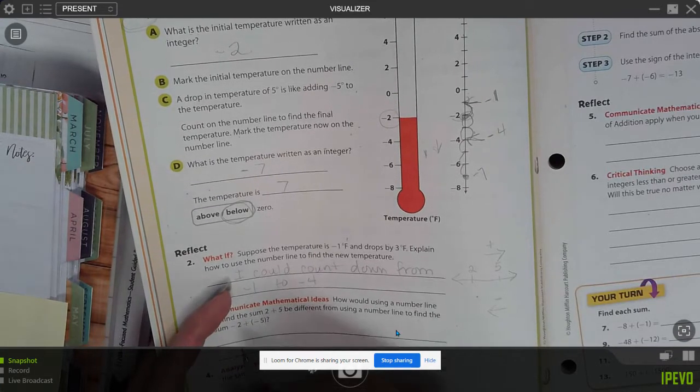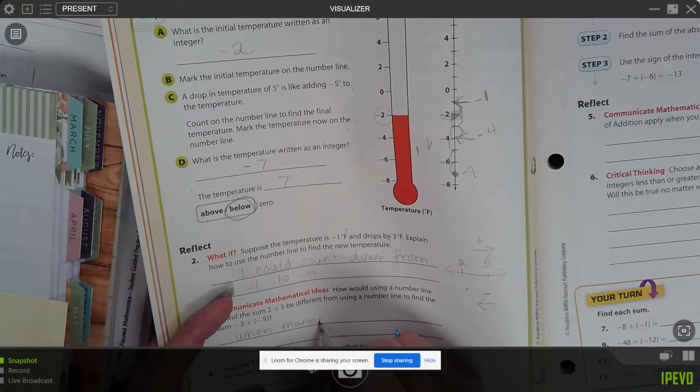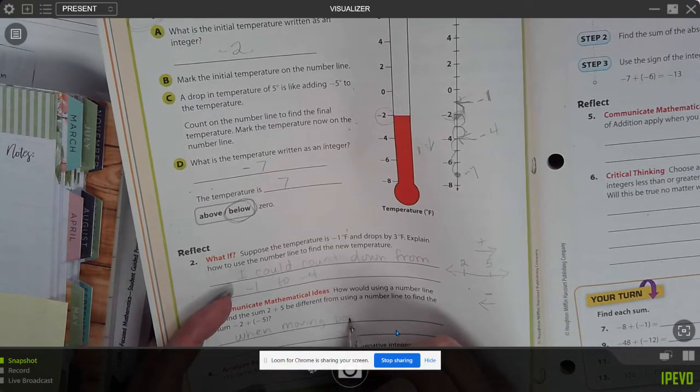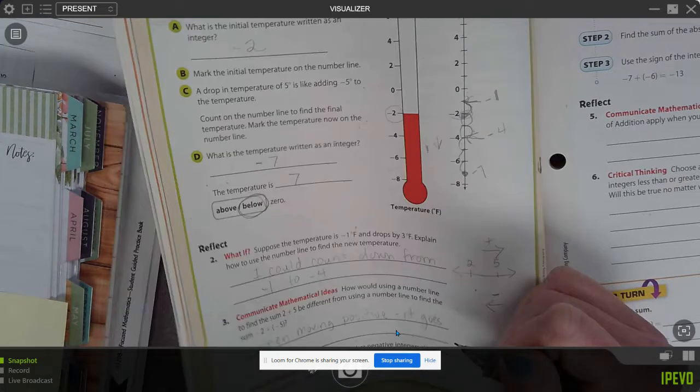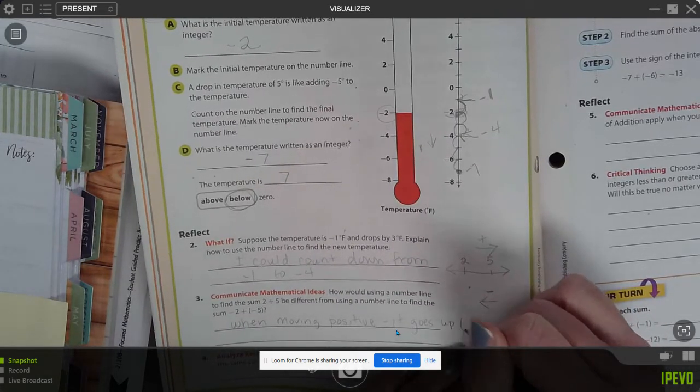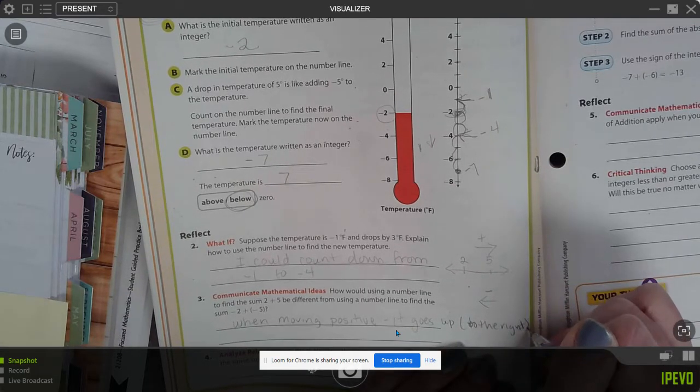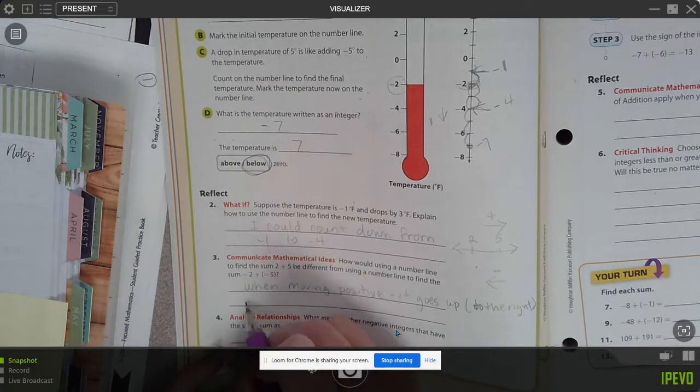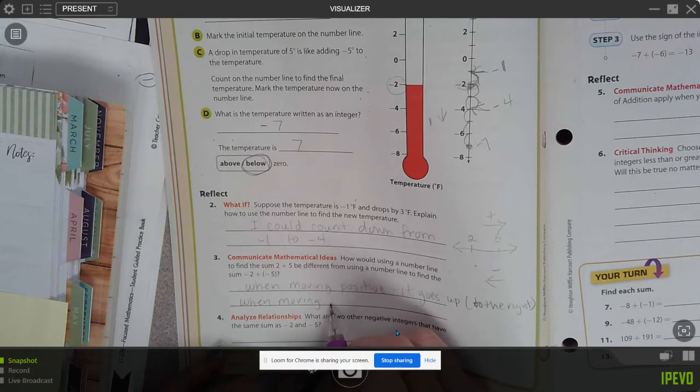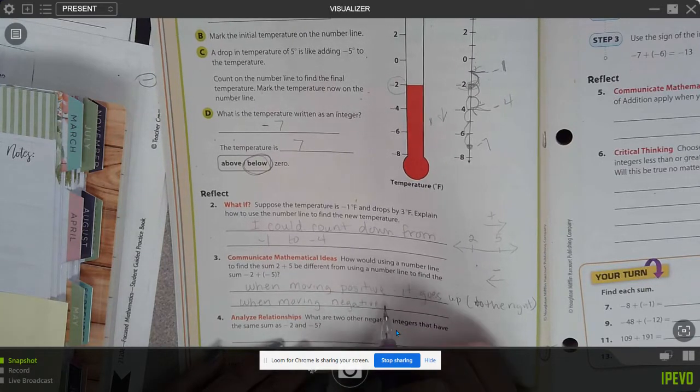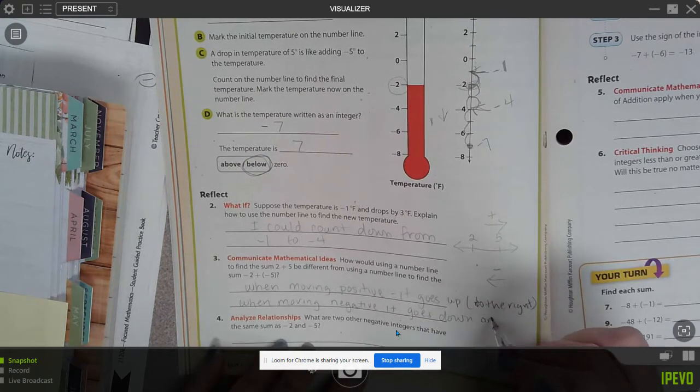So the best way to describe that would be to say, when moving positive, positive, it goes up or to the right. And on the opposite way, when moving negative, negative, it goes down or left.